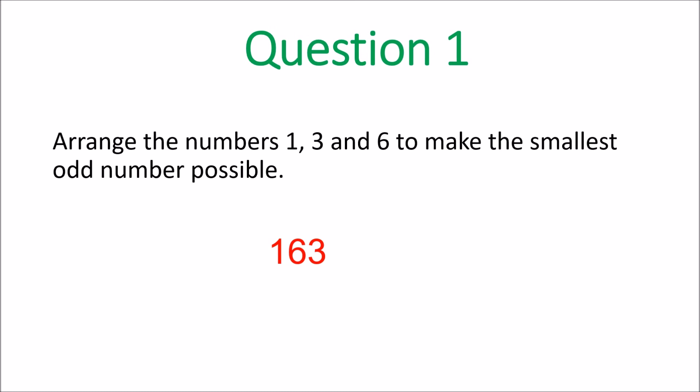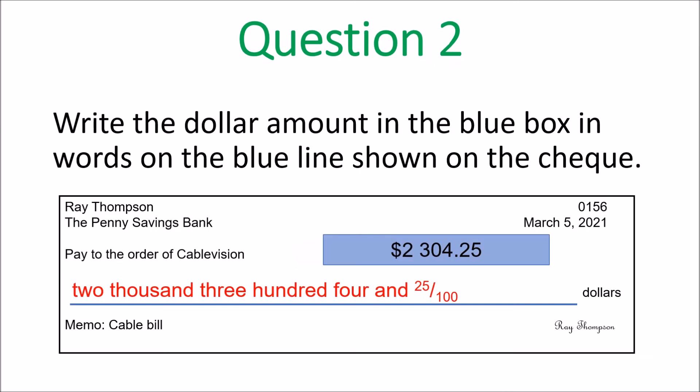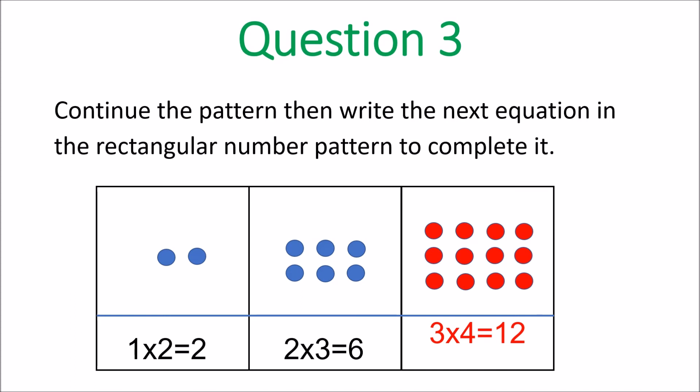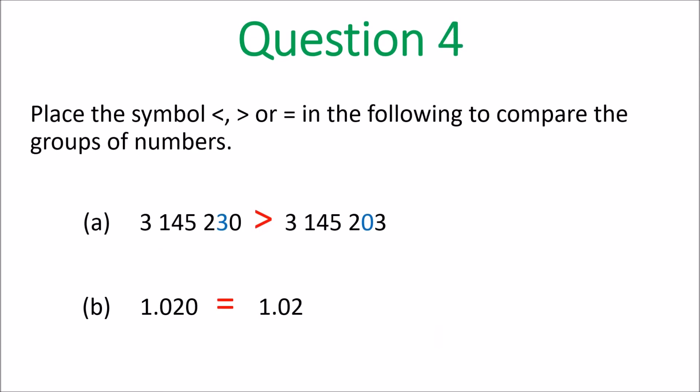The smallest odd number is 163. That's the only way you can write that. Got it? Good. Question 2. 2,304 and 25 hundredths dollars. That's how you have to write that, Grade 6. Question 3. It's 3 times 4. The dots must be there. And then 3 times 4 is 12. That's it. You don't even need to know what rectangular numbers are.